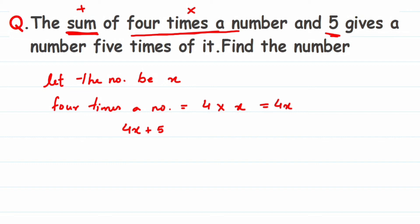Five times of it is nothing but five times a number. Like four times a number is four into x, five times a number will be five into x, which is nothing but 5x. So here 4x plus 5 will be equal to 5x.